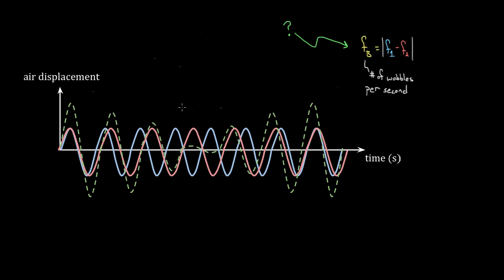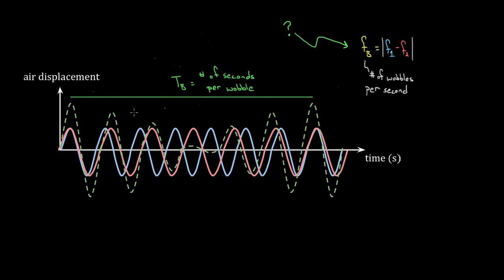But why is this the formula for beat frequency? Why isn't it something more complicated? That's what I want to show you how to derive in this video. We're going to approach it by finding the beat period first. So if beat frequency is number of wobbles per second, then the beat period is the number of seconds per wobble — how long does it take to go from constructive all the way back to constructive again? Because if we can find the beat period, the frequency is just one over the period.